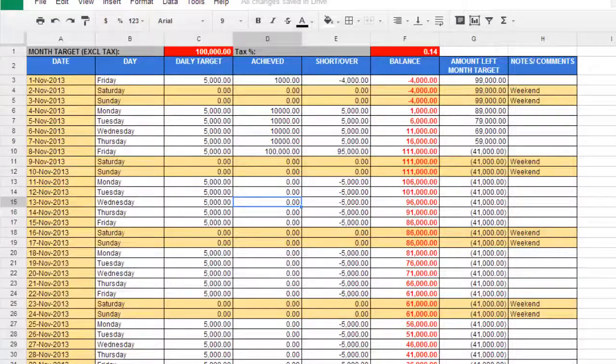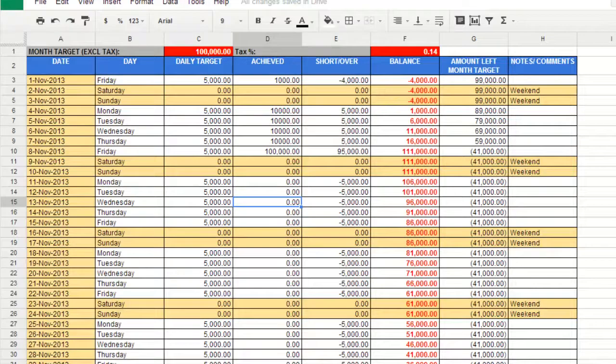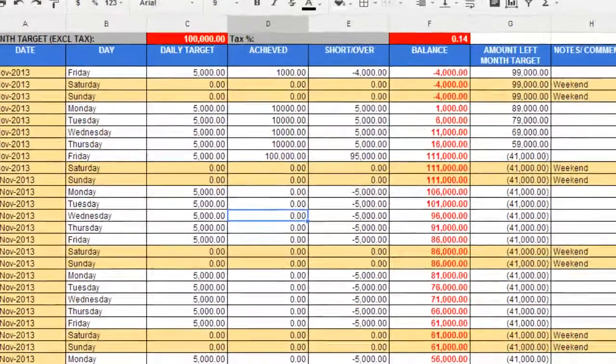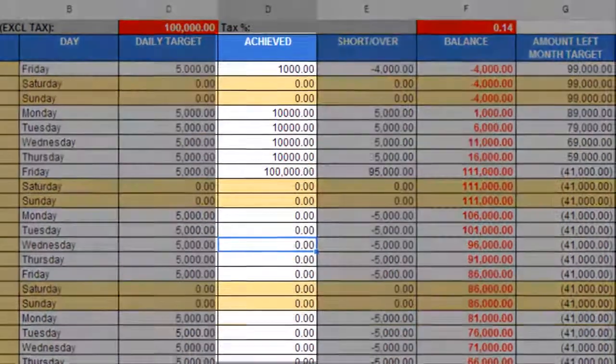Within each month I set a target for each day in the daily target column. We do this ahead of time and not on the day so plan ahead. Then every morning I sum up any monies I've received from my invoices and capture it in the achieved column.